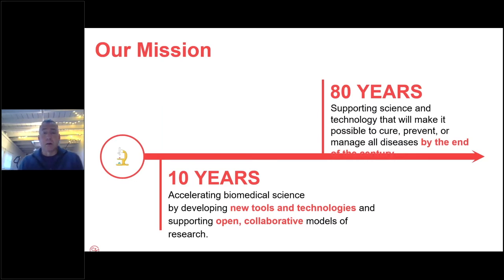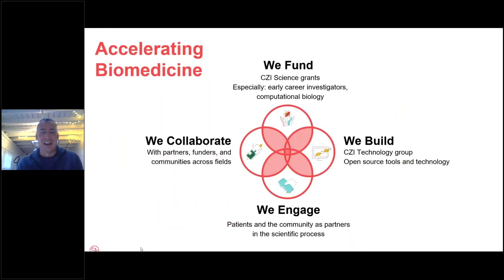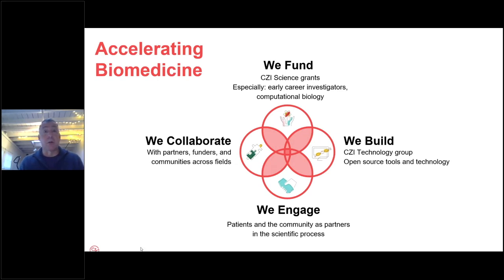We are an unusual philanthropic organization in that we have a technology arm and an advocacy component. About a year and a half ago we formulated an open science program within the science funding program. Across all of our programs, we try to take a multi-pronged approach — not simply being a funder, but finding ways to collaborate in finding new solutions and engaging with the community. We also have an entire technology arm. What I want to do in these slides is give you, through the lens of preprints, an example of how we're engaging in each one of these aspects.